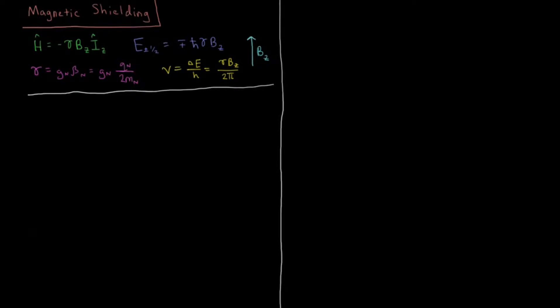In this video we're going to talk about magnetic shielding and nuclear magnetic resonance. We have our Hamiltonian here for a two-state system. We can either have a hydrogen or a proton nucleus which is either spin up or spin down.